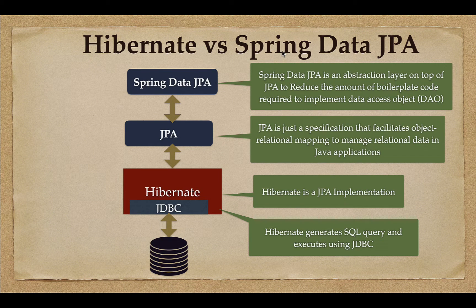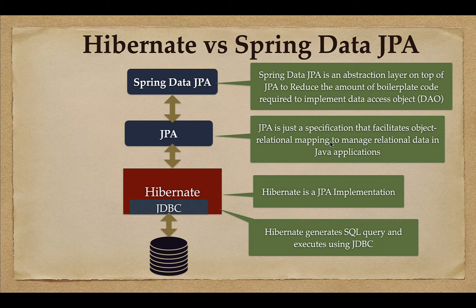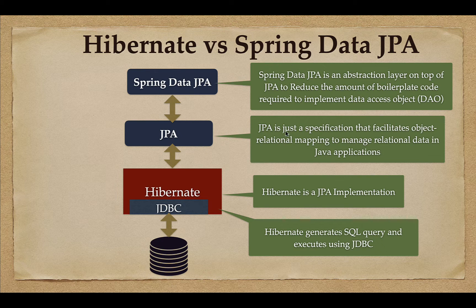Welcome back. In this lecture, let's quickly take a look at the difference between Hibernate and Spring Data JPA. Hibernate is basically an implementation of the JPA specification. JPA is just a specification or a standard API that facilitates object-relational mapping to manage relational data in Java applications. JPA provides ORM features, meaning instead of writing SQL statements, we can directly persist an object into a relational database table.